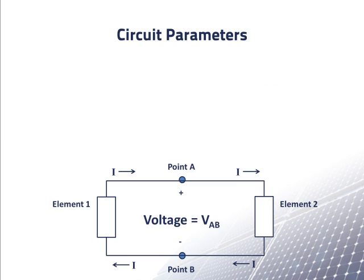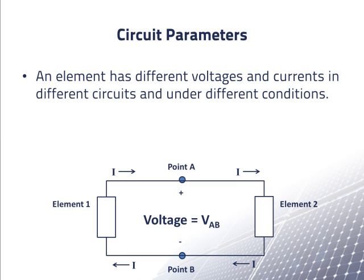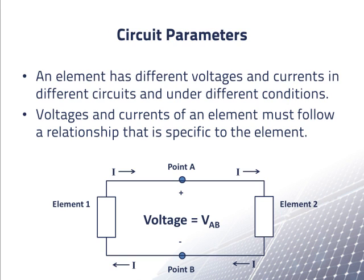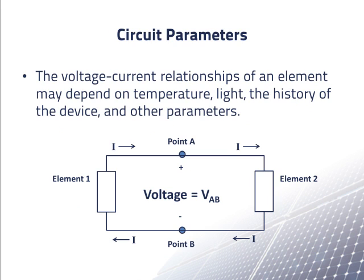For most elements, there is a range of possible voltages and currents that the device can have. However, the voltages and currents of an element must obey a relationship that is different for different elements. For some elements, especially ones with more than two connections, these relationships can be fairly complicated. The relationship of voltage and current for a specific element often depends on the temperature and may also depend on light exposure, the past history of the element, and other parameters.